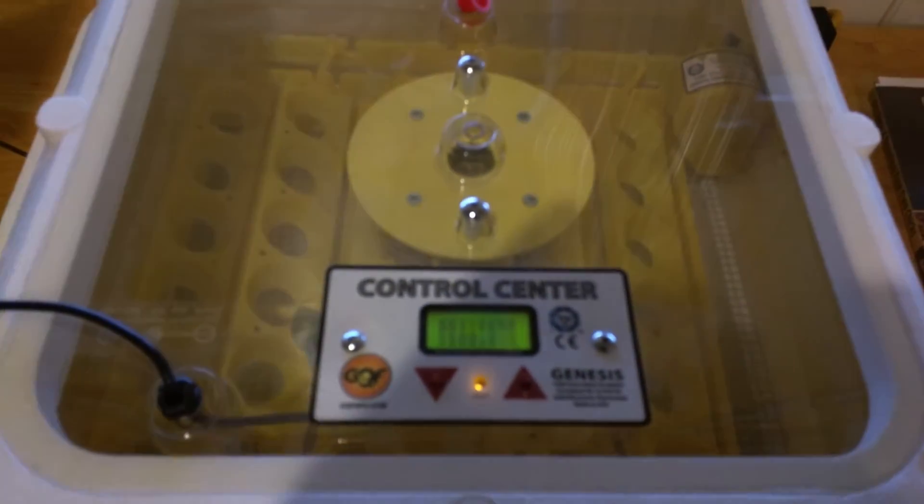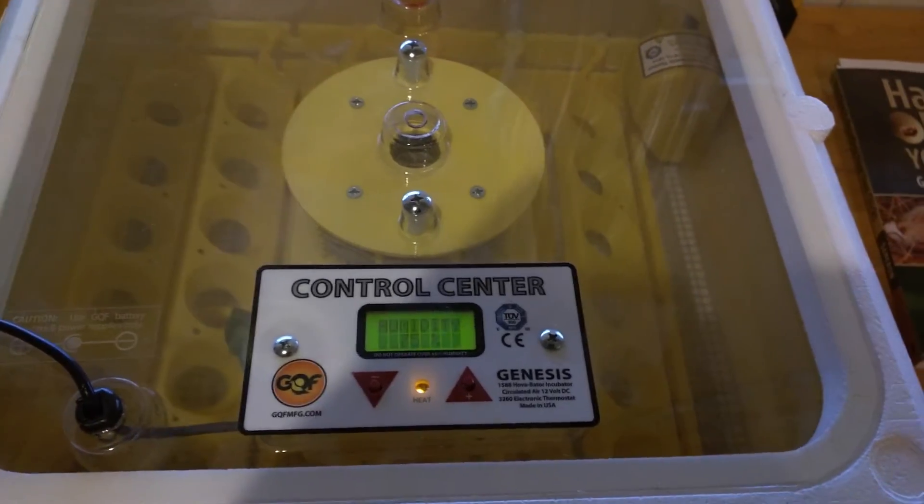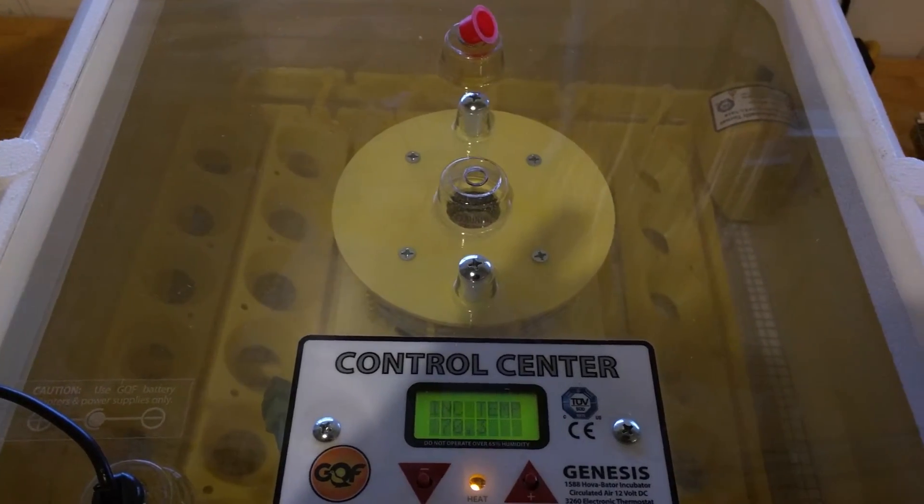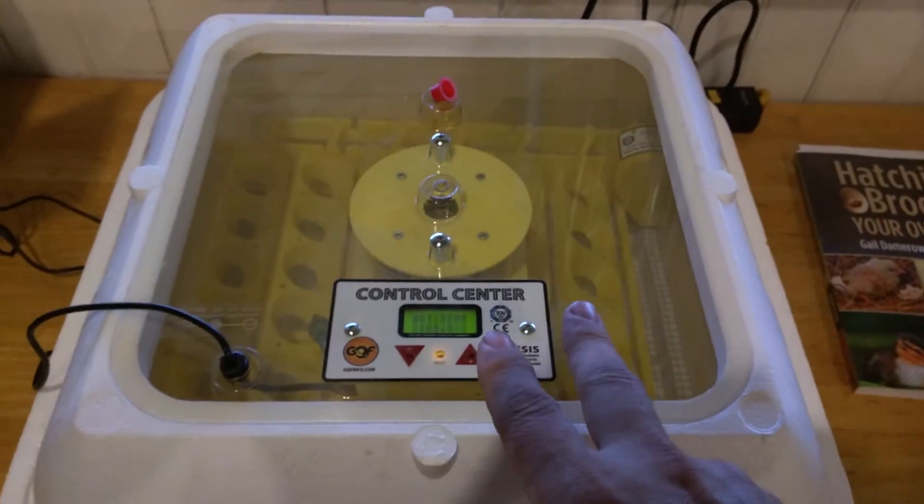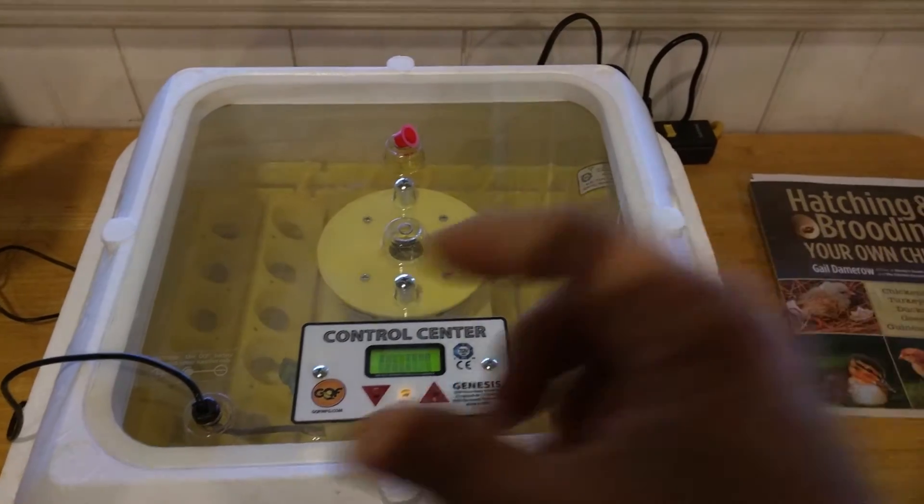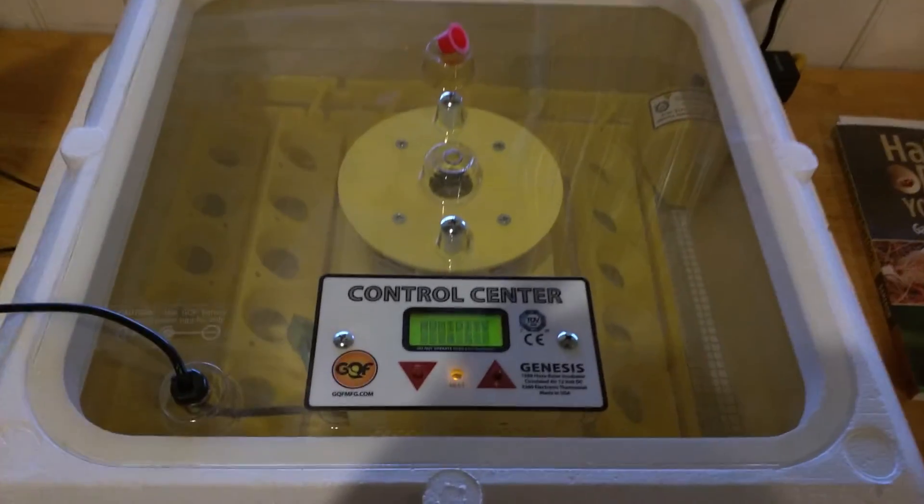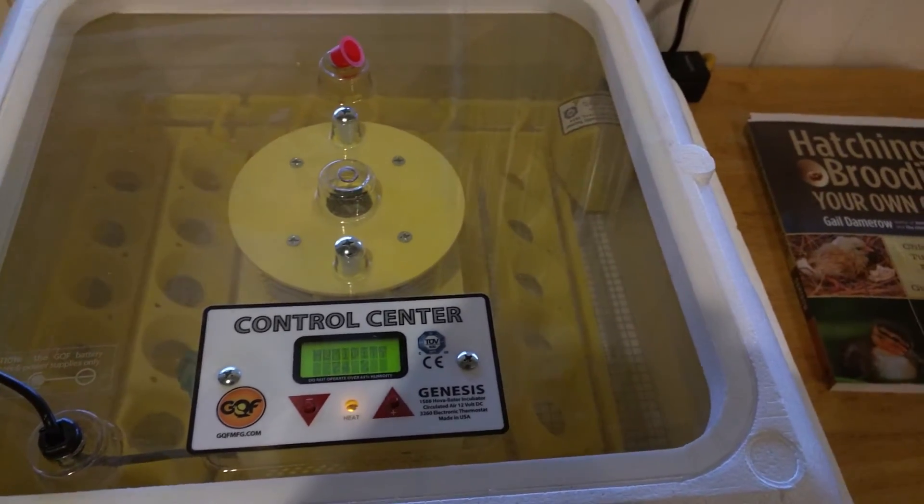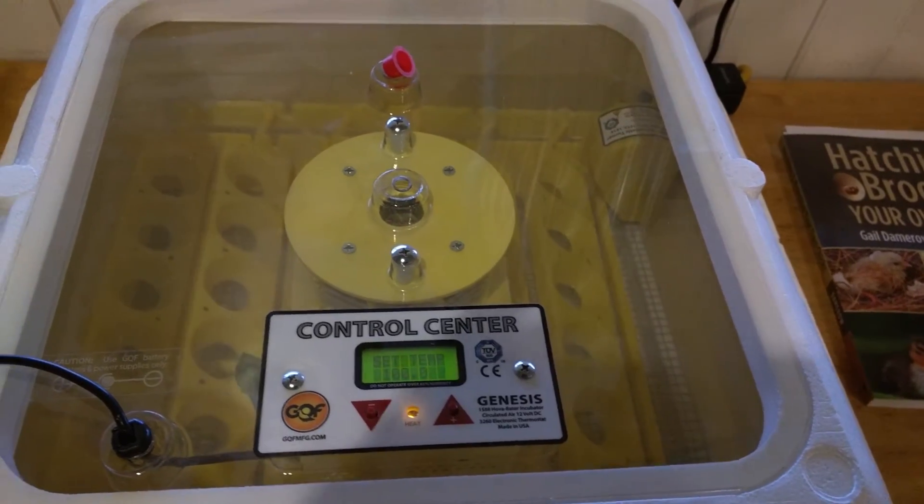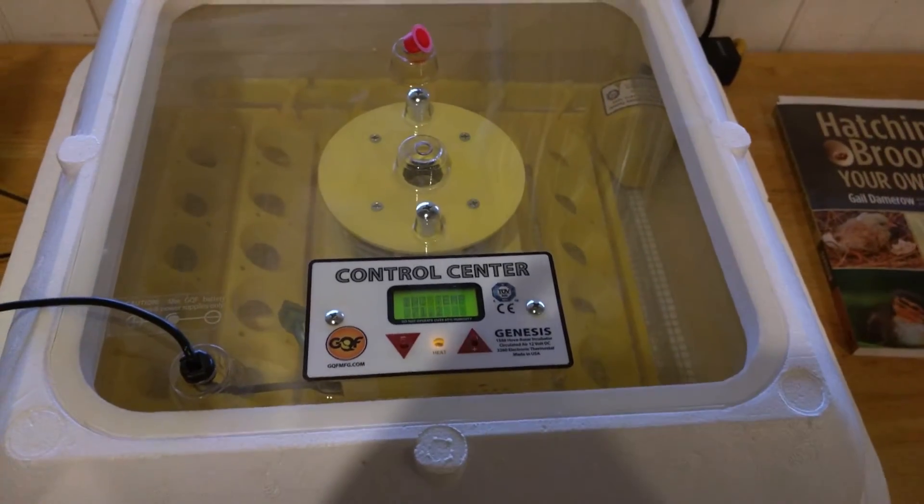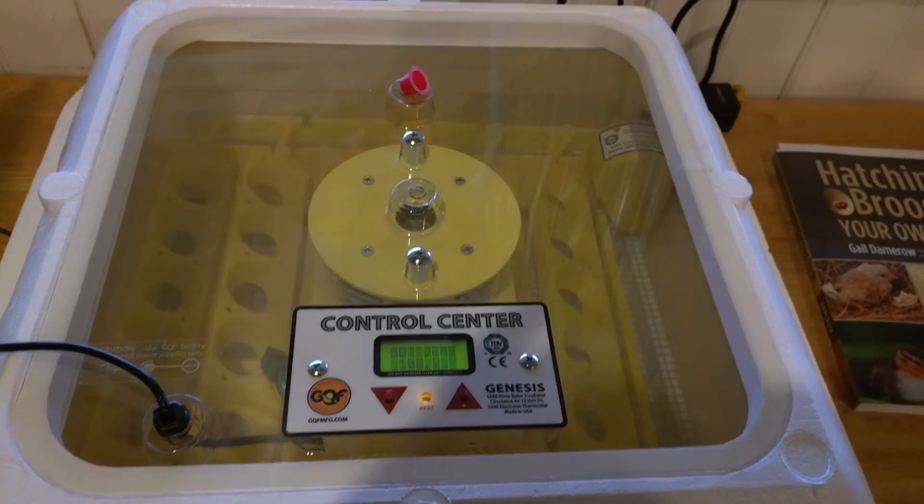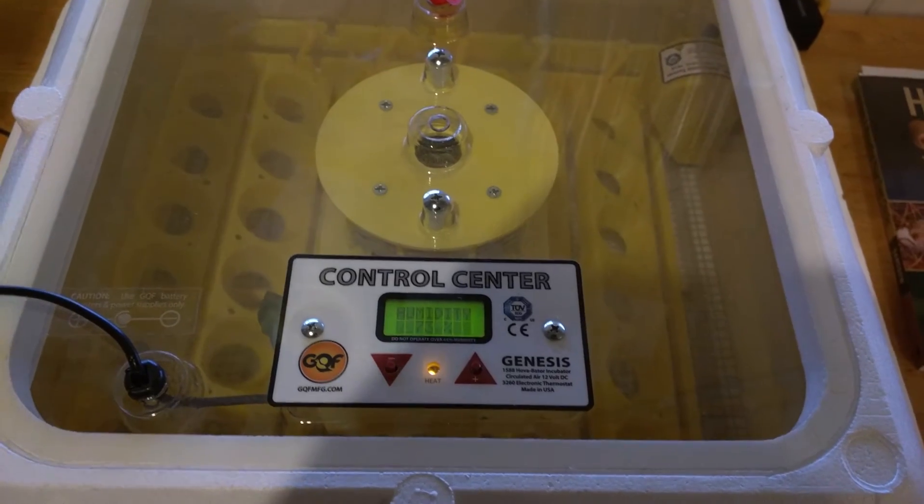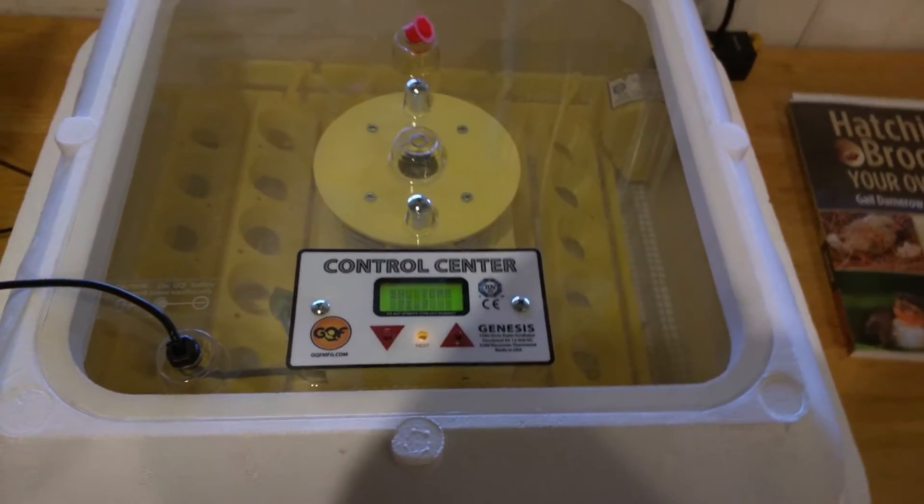But basically you keep them in here. It takes 21 days to hatch. On day 17, 18, you take the turner off and you put the eggs in for the last two, three days not in the turner. I took mine on day 17. So when the chickens come out, they don't get crushed and they die. And they can peck out naturally because if they're in there, they might not be able to peck out.